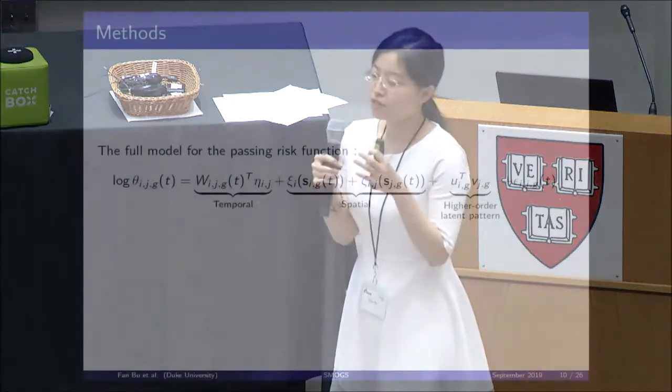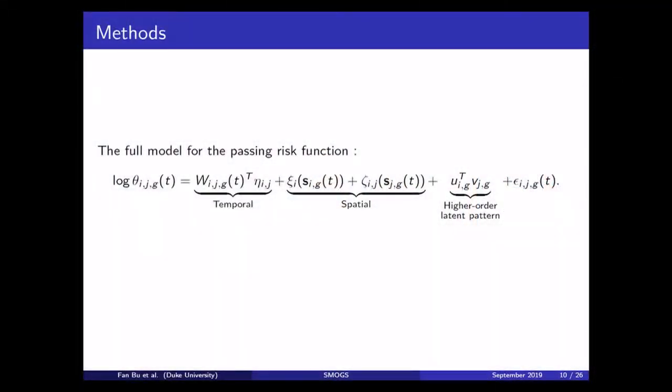So, just to recap, we assume that the instantaneous probability of the occurrence of a pass is dependent on three different things. Some temporal stuff, some spatial stuff, and then some leftover higher order latent stuff captured by our latent sender effect and latent receiver effect. And then, of course, some random noise.